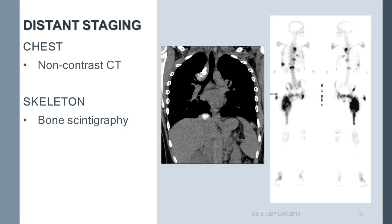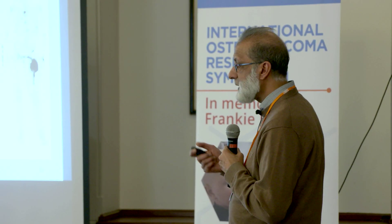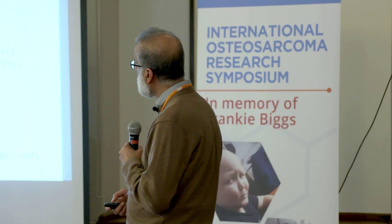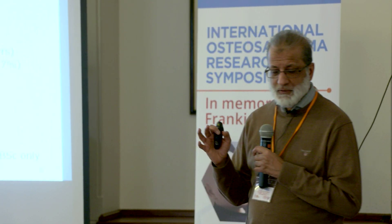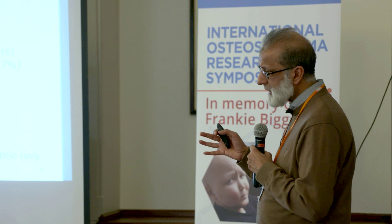For distant staging, a non-contrast chest CT is used. This is an unusual case of a large osteoblastic proximal femoral osteosarcoma with osteoblastic metastases in the mediastinum and above the diaphragm, identifiable also on bone scan. Traditionally, bone scintigraphy has been used for many years for staging the skeleton — here showing the primary tumor and metastases in the spine. Scintigraphy has been the standard for skeletal assessment for the past 10 years or so.